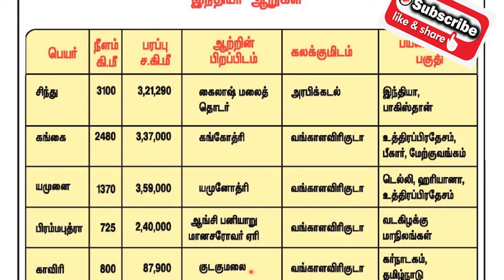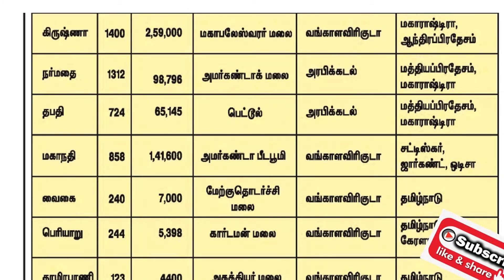This comes from Tanganyabha. In the same direction, Krishna is 100 km in the area. The beginning is 100 km. This is Mahabalishwarar Malay. This is now Kalakumitam. Tanganyabha.